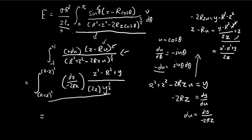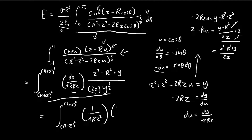Let me write this out in a neater form. Getting rid of the negative sign and flipping the bounds, the integral goes from r minus z squared to r plus z squared. Grouping the constants together, we have 4rz squared. The integrand becomes z squared minus r squared times y to the negative 3 over 2, plus y to the negative 1 half, all dy. This is an integral with respect to y, and these are actually pretty solvable.